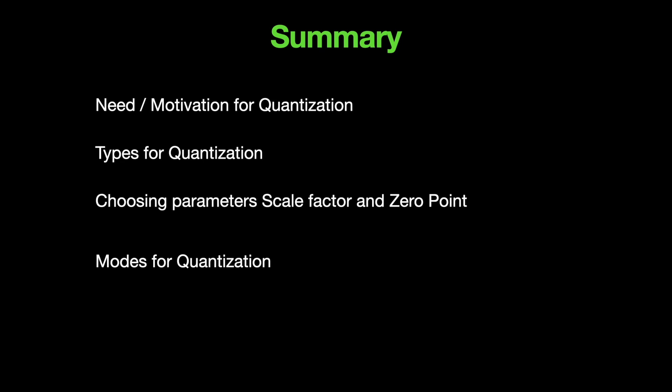So, that covers pretty much the basics of quantization. We started with the need for quantization, the different types of quantization, such as symmetric and asymmetric. We also quickly learned how we can go about choosing the quantization parameters, namely the scale factor and the zero point. And we ended with different modes of quantization. But how is it all implemented in, say, PyTorch or TensorFlow?